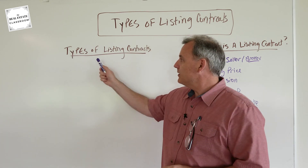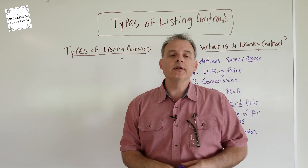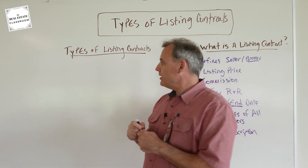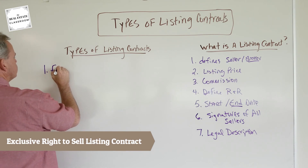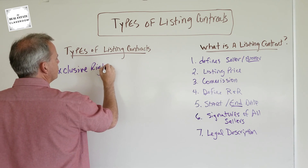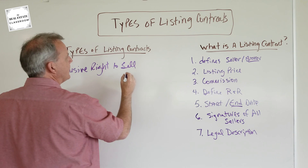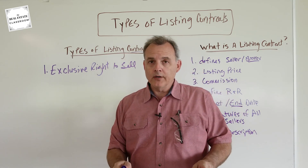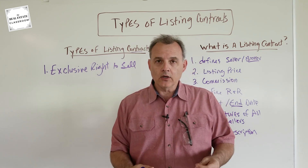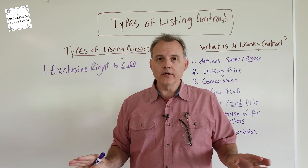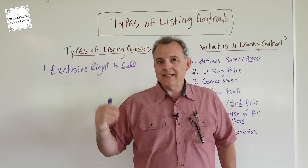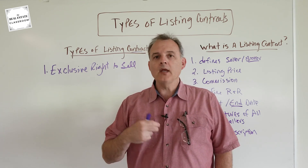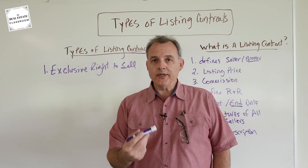Now let's talk about the types of listing contracts you need to know for your real estate licensing exam — there are five. The first is what we call an exclusive right to sell. Under an exclusive right to sell listing contract, the listing broker has the exclusive right to represent the seller in the transaction. No matter who procures the buyer, the listing broker is going to get paid the agreed-upon commission. So even if the seller does their own open house and finds their own buyer, the listing broker still receives the commission.